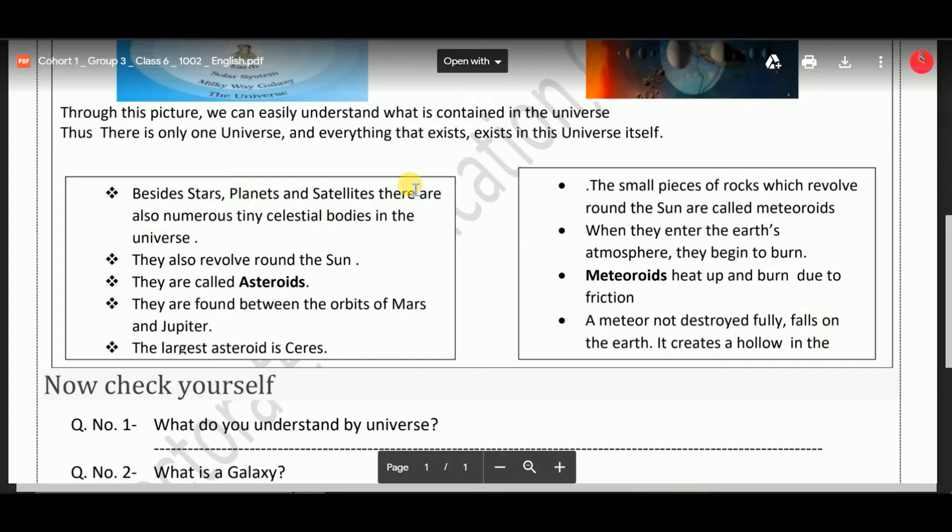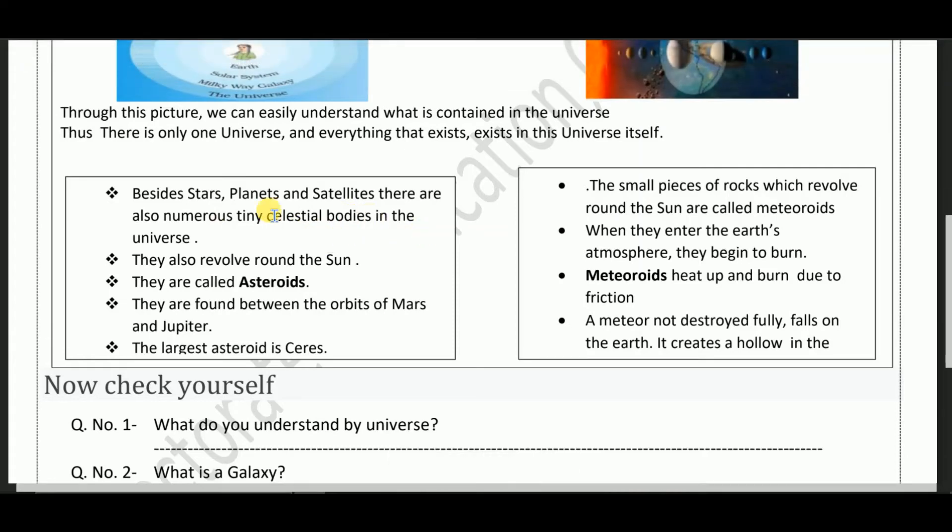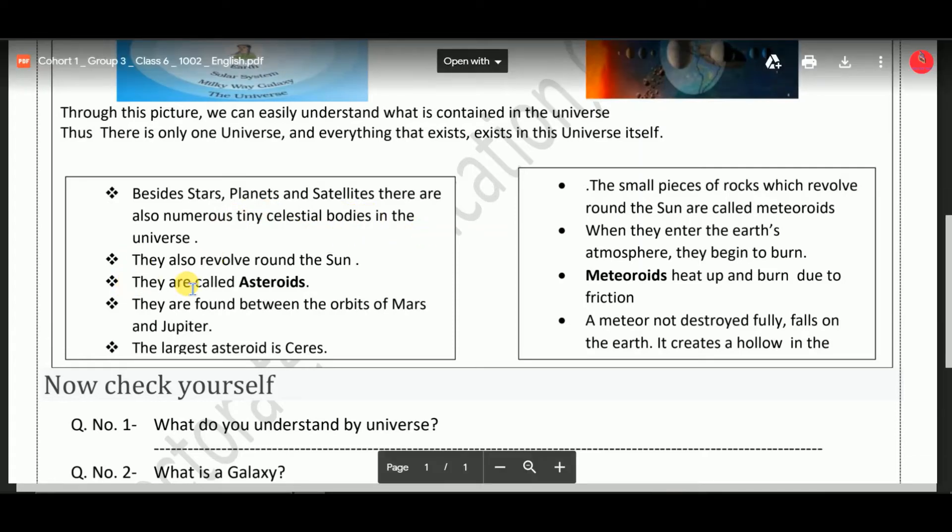Besides stars, planets and satellites, there are also numerous tiny celestial bodies in the universe. First, they also revolve around the sun. Second, they are called asteroids. Third, they are formed between the orbits of Mars and Jupiter. Fourth, the largest asteroid is Ceres.